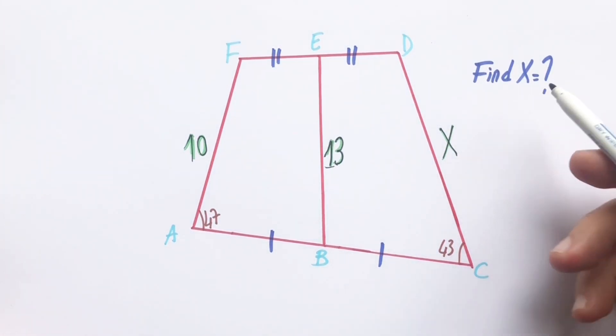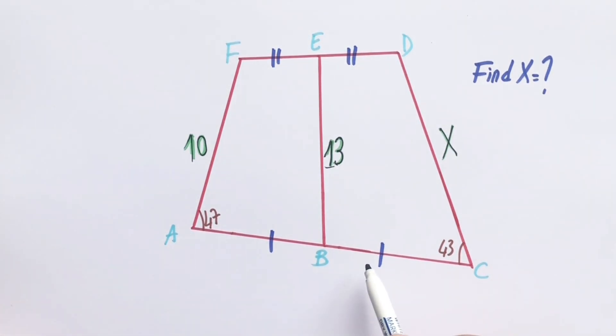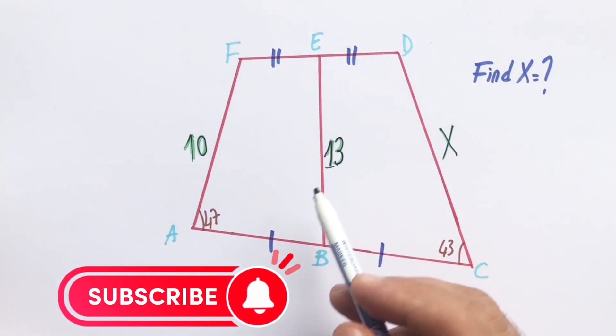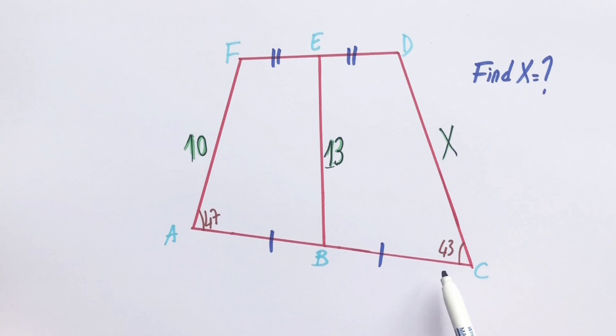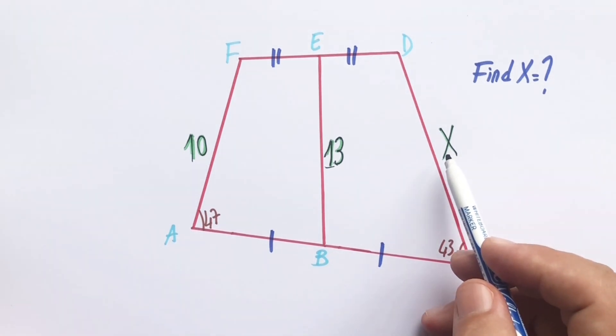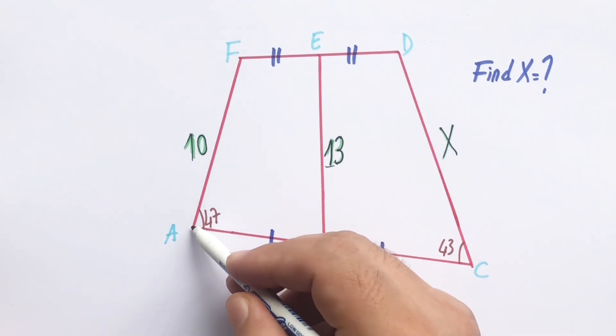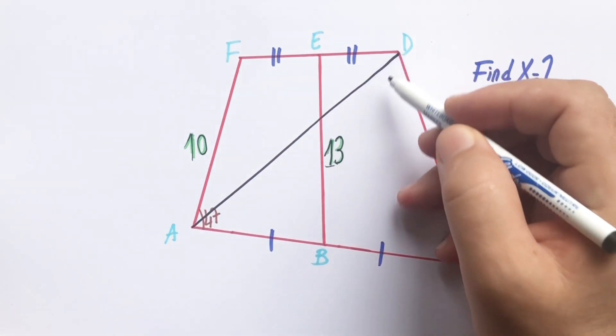In this video we have one quadrilateral where these two lengths are equal. Here is 10, 13, and these two angles are given, so X is asked. Let's coordinate these corners.